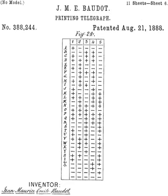As there was no longer a connection between the operator's hand movement and the bits transmitted, there was no concern about arranging the code to minimize operator fatigue. Instead, Murray designed the code to minimize wear on the machinery, assigning code combinations with the fewest punched holes to the most frequently used characters. For example, the one-hole letters are E and T. The ten two-hole letters are A-O-I-N-S-H-R-D-L-Z, very similar to the order used in linotype machines.